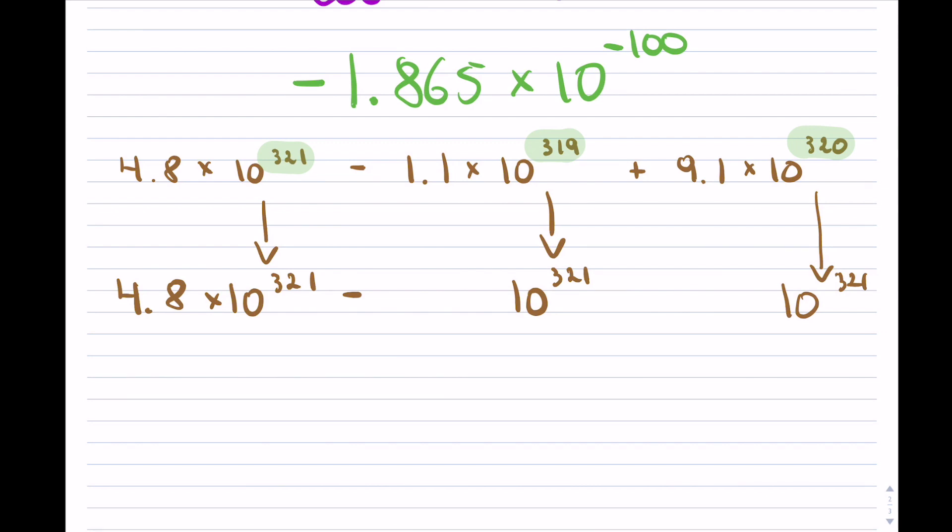So I have to change all of them to 321. First, 319 got bigger by two, and 320 got bigger by one, which means I'm going to rewrite this. So if this got bigger by two, this will get smaller by two, meaning I'm going to get that—notice it got smaller in magnitude. And here it will get smaller by one, and notice that. And now my exponent is the same, so I have the same exponent.